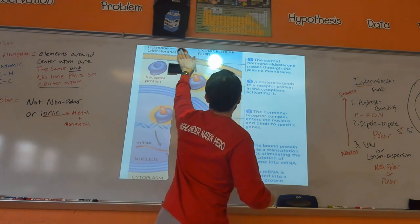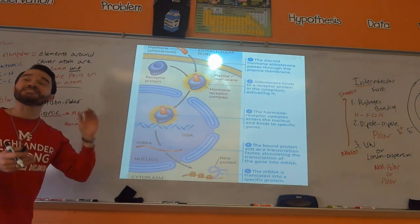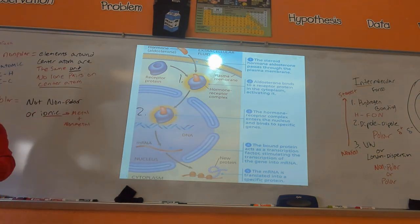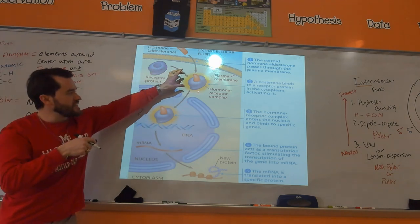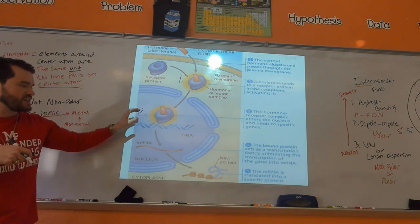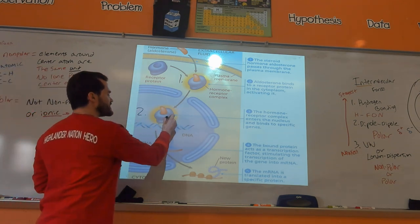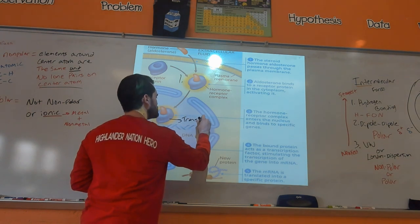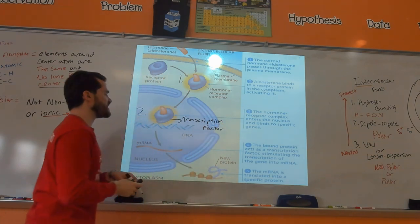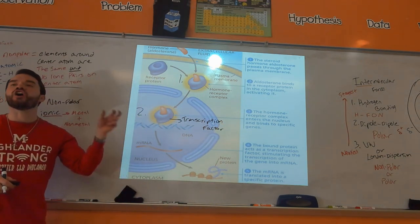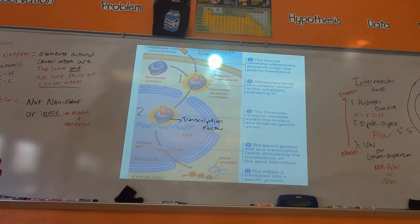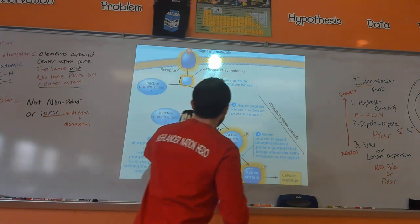What's unique about intracellular receptors is that they are very simple — the molecule that does reception also does step two, transduction. They form what's called the hormone-receptor complex, which then acts as a transcription factor, turning on specific genes to produce the protein you want.